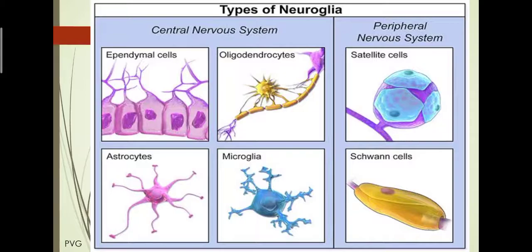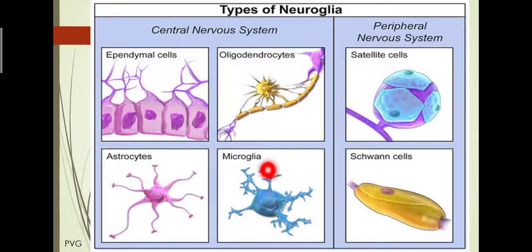The second type of cell is microglia, also known as brain macrophages. These are small sized with few branches. They are derived from monocytes and act as macrophages. They go to the site of injury in the central nervous system, removing dead neurons and cell debris, and mediate the immune response in the CNS.